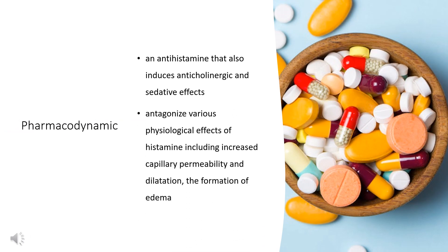Pharmacodynamics: Clemestine is an antihistamine that also induces anticholinergic and sedative effects. Antihistamines competitively antagonize various physiological effects of histamine, including increased capillary permeability and dilatation, the formation of edema, the flare and wheal response, and gastrointestinal and respiratory smooth muscle constriction. Within the vascular tree, H1 receptor antagonists inhibit both the vasoconstrictor and vasodilator effects of histamine. Depending on the dose, H1 receptor antagonists can produce CNS stimulation or depression. Most antihistamines exhibit central and/or peripheral anticholinergic activity. Antihistamines act by competitively blocking H1 receptor sites, but do not pharmacologically antagonize or chemically inactivate histamine, nor do they prevent its release.